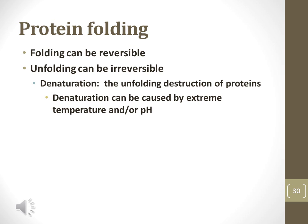Proteins that form long enough chains will take on a specific three-dimensional shape known as its folding pattern. Folding patterns may be reversible and able to change back and forth, while other folding patterns may be irreversible. Denaturation is the unfolding of a protein which leads to the destruction of that protein. Extremely low and, more commonly, extremely high temperatures and extreme pH ranges will denature proteins.